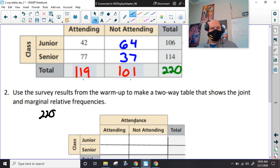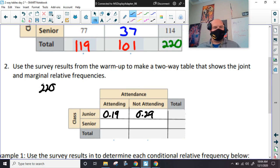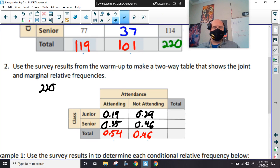So, 42 divided by 220 is like 0.19. 64 divided by 220, 0.29. 77 divided by 220, 0.35. 101 divided by 220, 0.46. Wait, I did this. This should be 0.46. I did the wrong one. Should have done 37 divided by 220. That is 0.17. All right. That's more better.